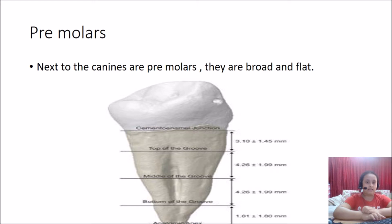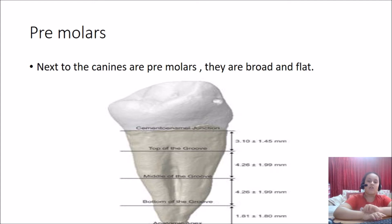Next to the canines are premolars. They are broad and flat and they crack the food, like cracking nuts. For this reason, they are also called cracking teeth. There are four premolars in each jaw — four in the upper jaw and four in the lower jaw.